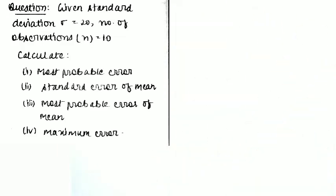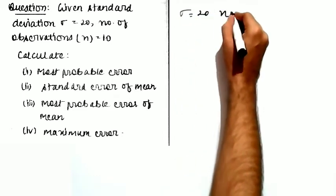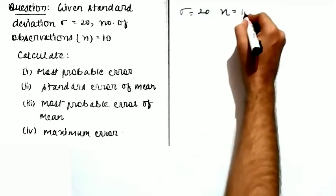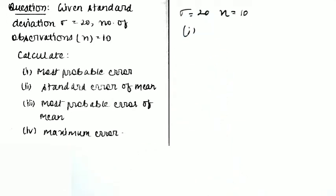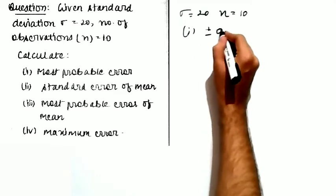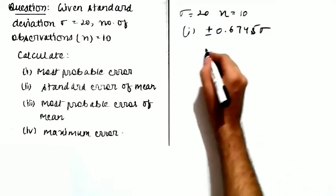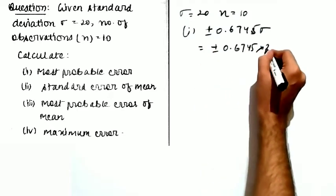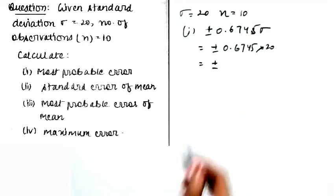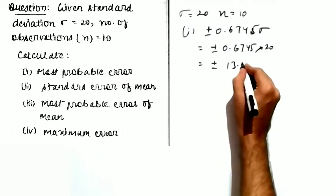You are given the standard deviation σ = 20 and the number of observations n = 10. There are four parts. The first part asks for the most probable error, which is 0.6745σ = 0.6745 × 20 = ±13.49.